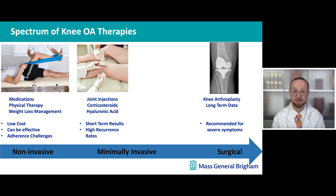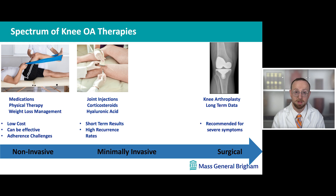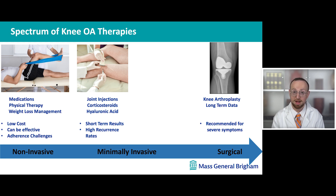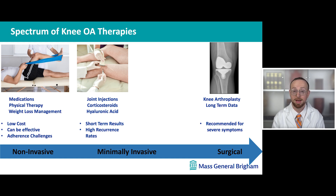Currently, when patients are diagnosed with osteoarthritis and have knee pain, there are a spectrum of treatments that they may consider. Typically, they'll try oral medications to help with pain, physical therapy, weight loss management, and if those treatments aren't working, they can progress to slightly more invasive treatments such as steroid injections into the knee joint or other kinds of injections. And for those that have severe knee pain, patients will undergo knee replacement or knee arthroplasty, which has excellent long-term data to support its safety and efficacy.